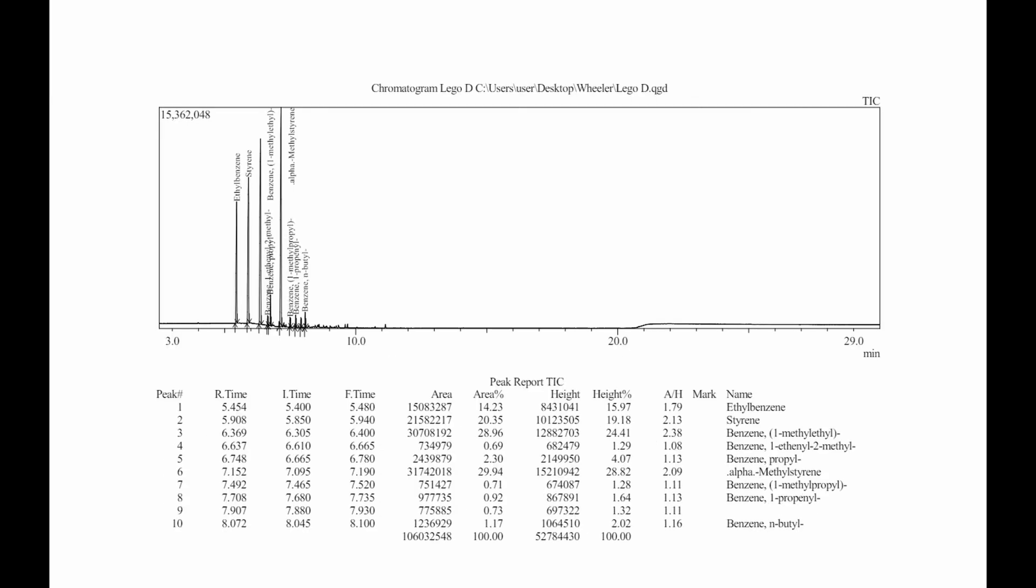The fourth distillate is made up of four main components, again, with the absence of any toluene. We also start to see some higher boiling point compounds come over, such as N-butylbenzene.